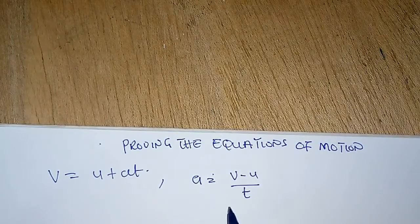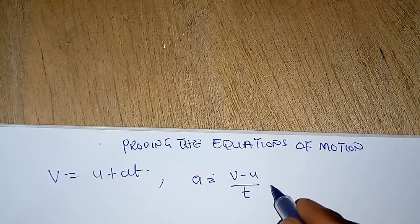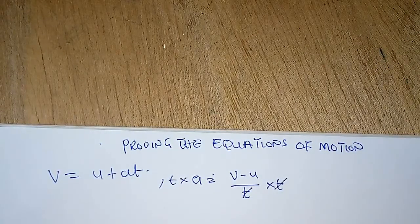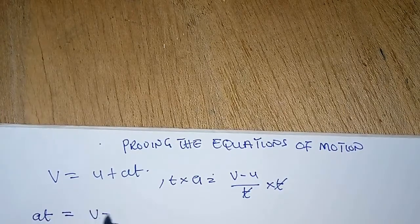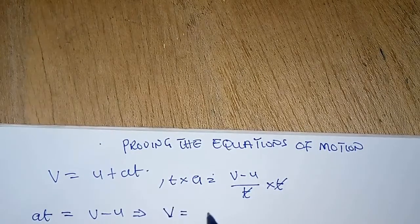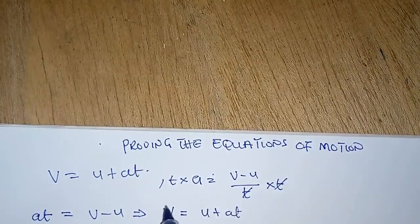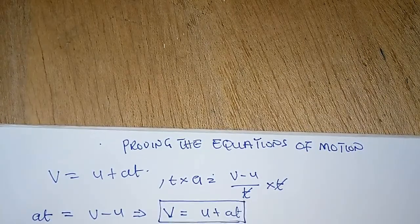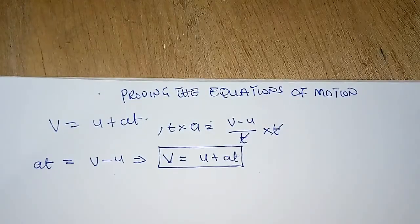Mathematically, we multiply through by the denominator T. So we multiply both sides by T — T cancels on the right side — and we are left with AT equals V minus U. Because we are proving V equals U plus AT, we send negative U across to get V equals U plus AT. So this is the first equation of motion.